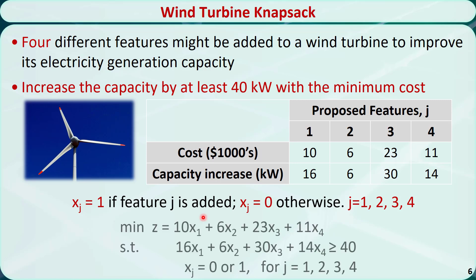One difference is that this is changed to a minimization problem. The other difference is that the original objective function is changed to the constraint function, and it is supposed to be greater than or equal to 40 kW.